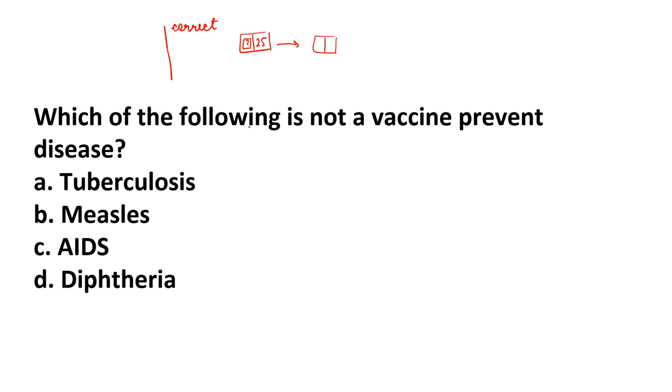The options are TB (Tuberculosis), Measles, AIDS, and Diphtheria. Which of these does not currently have a vaccine? Quickly mark your answer, then we will match it with the correct answer.